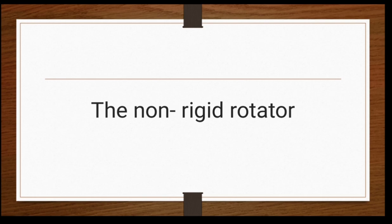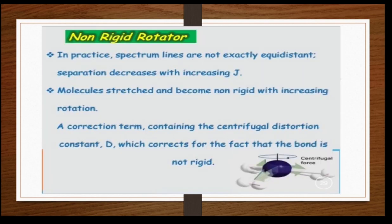The non-rigid rotator is a rotator in which the bond is breakable — it is not as strong. In practice, spectral lines are not exactly equidistant. When we draw an energy level diagram of a rotational spectrum for the non-rigid rotator, the lines are not spaced at equal distances, and the separation between two energy levels decreases as we increase the J value. J is the rotational quantum number: 0, 1, 2, 3, and so on. Simply put, as J increases, the B value decreases — there is an inverse relationship between B and J.